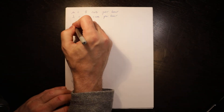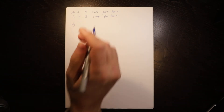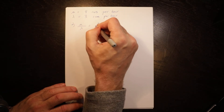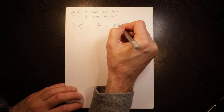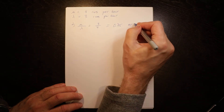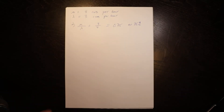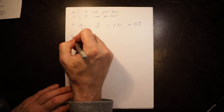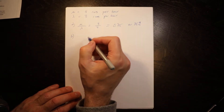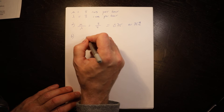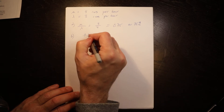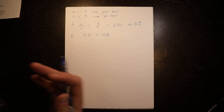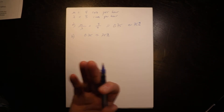Part (a): utilization rho equals lambda over mu, which is three over four, equals 0.75 or 75%. Part (b) asks for the proportion of time the mechanic is busy — that is the definition of utilization — so that's also 0.75 or 75%.